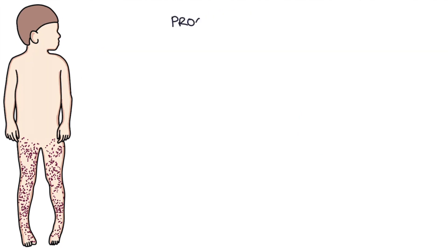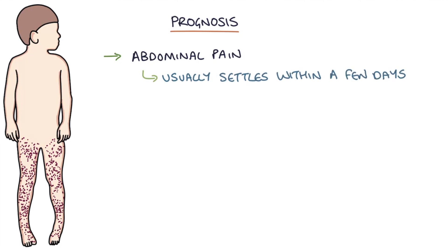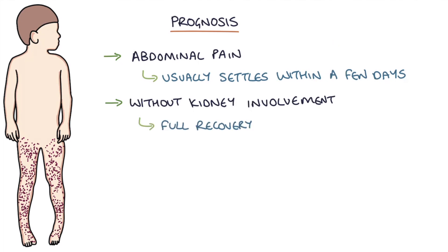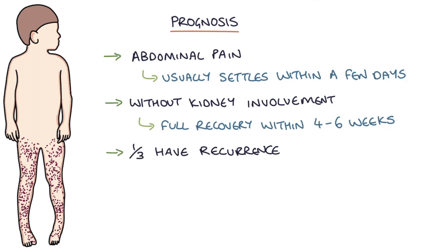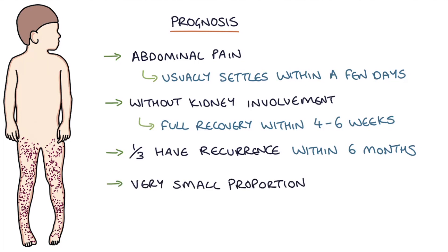Regarding prognosis, abdominal pain usually settles within a few days. Patients without kidney involvement can expect a full recovery within 4–6 weeks. A third of patients will have a recurrence of the disease within 6 months, and a very small proportion of patients will develop end-stage renal failure.